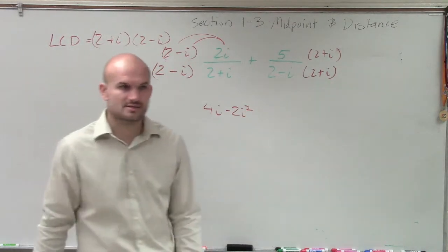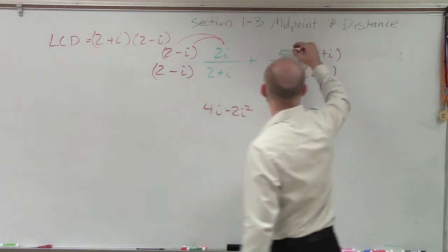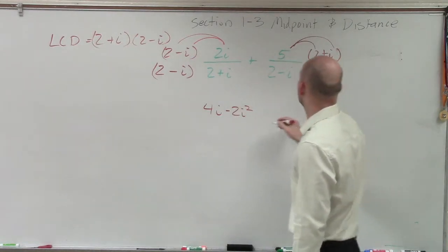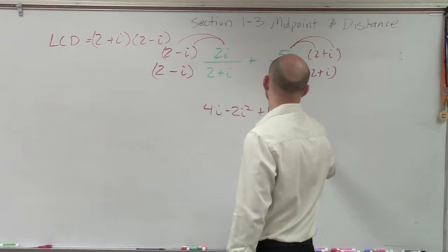Now, I'll go back to the i² in a second. All right? And then, up top here, when I apply the distributive property, I get plus 10 plus 5i.